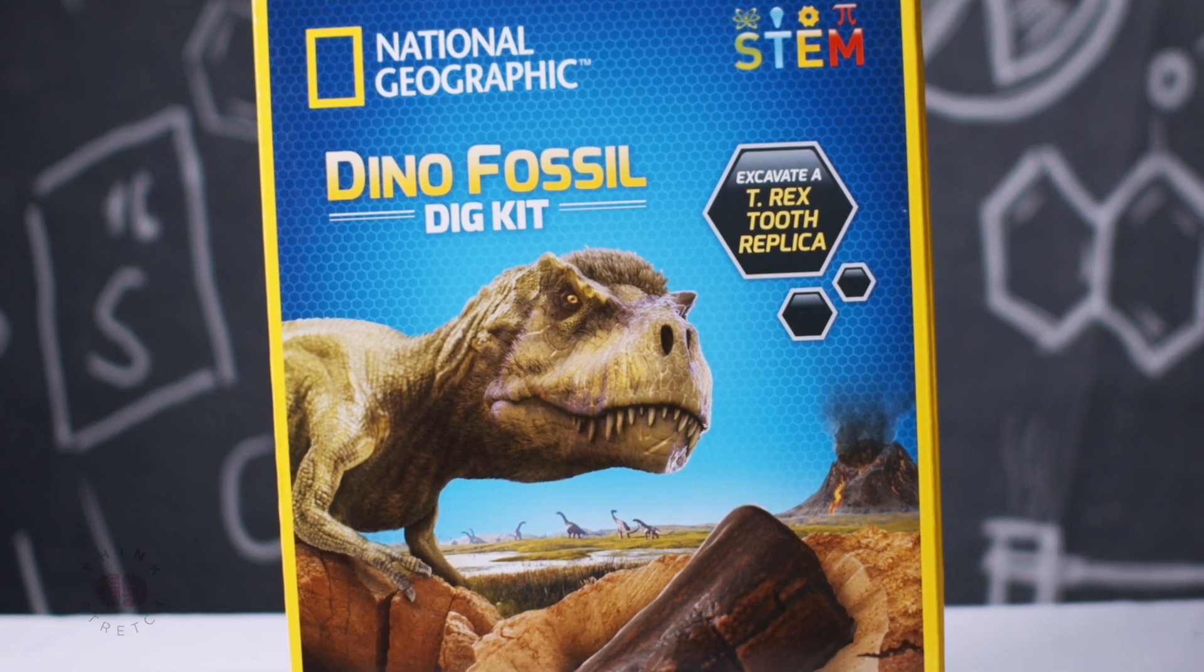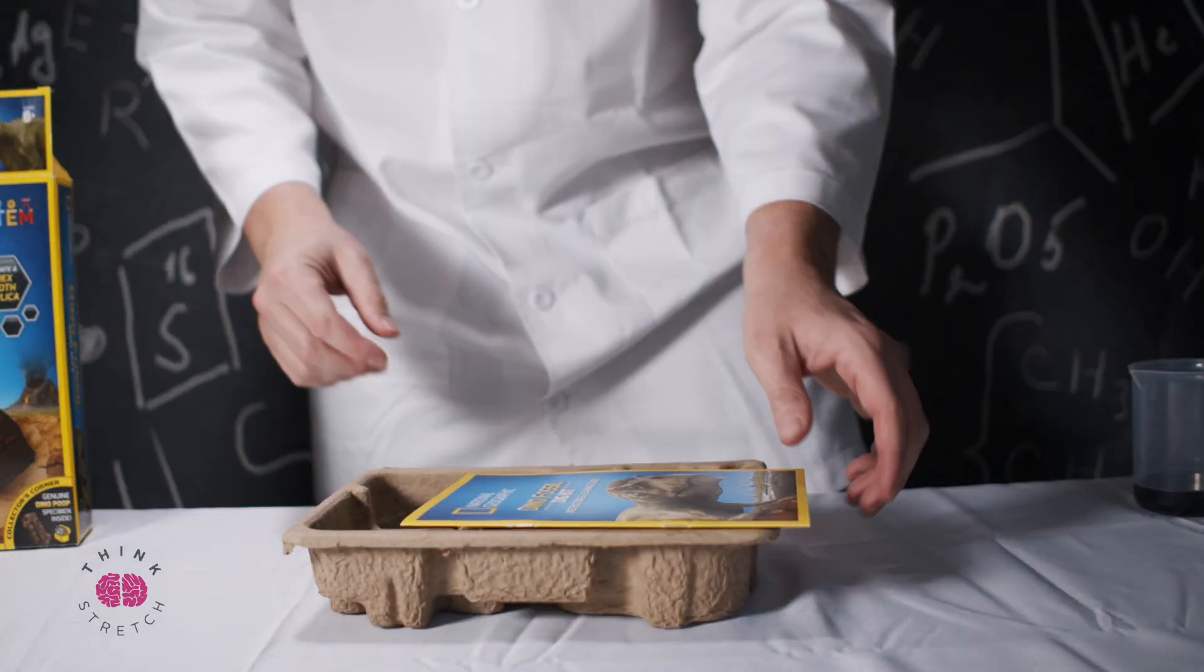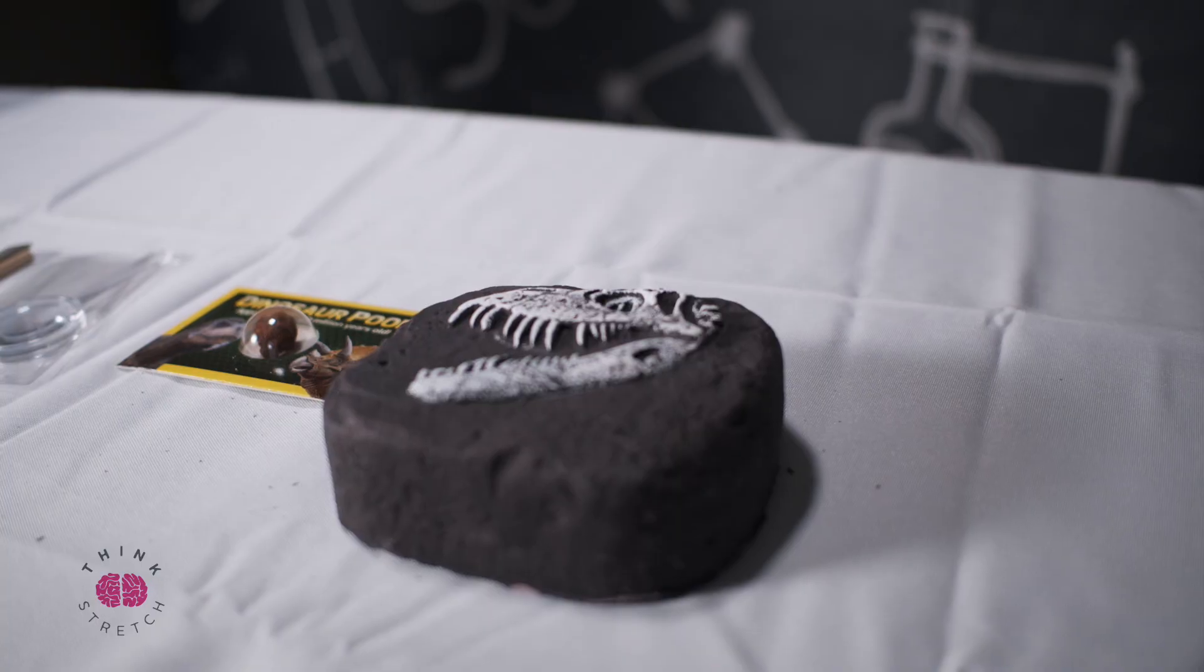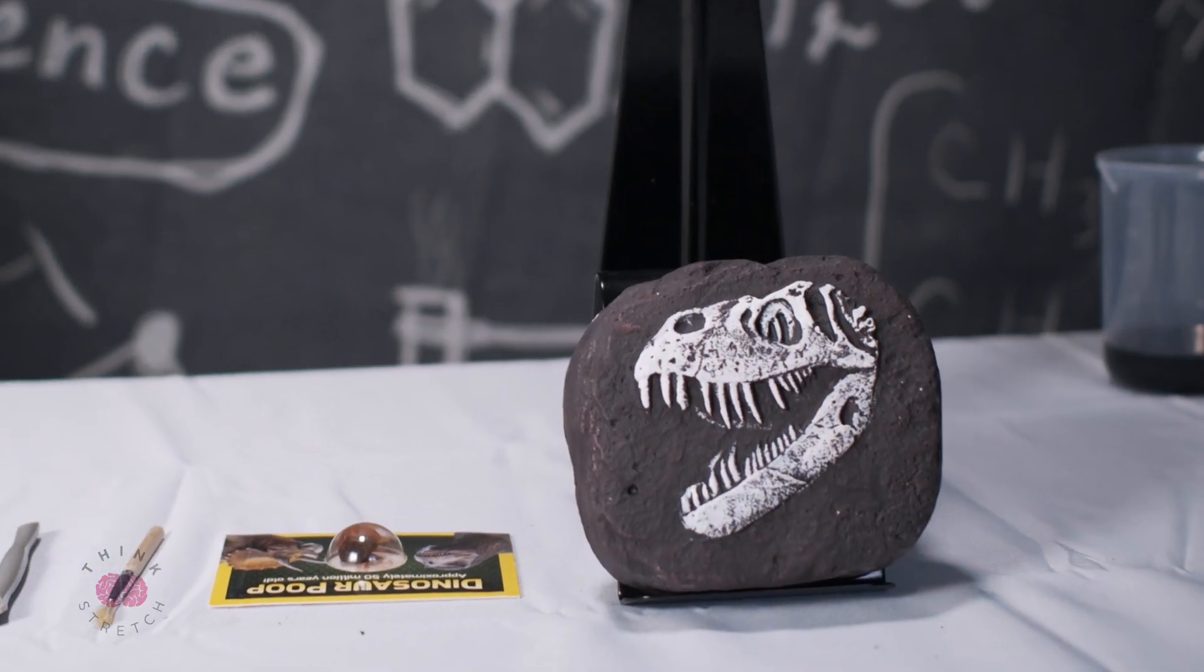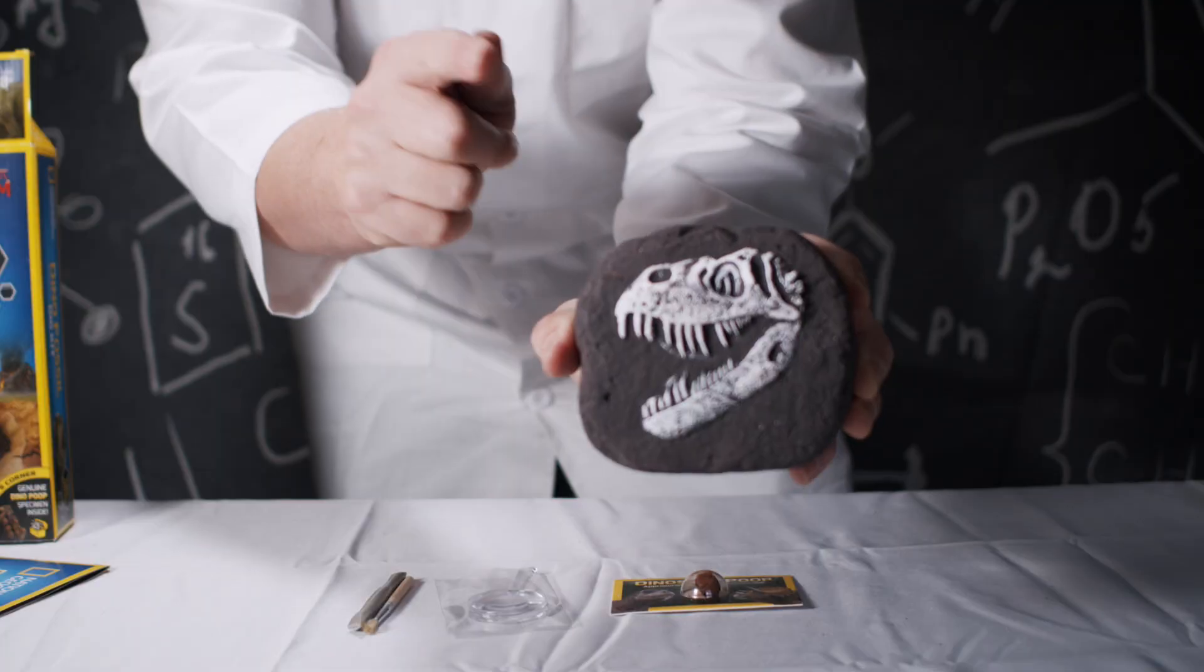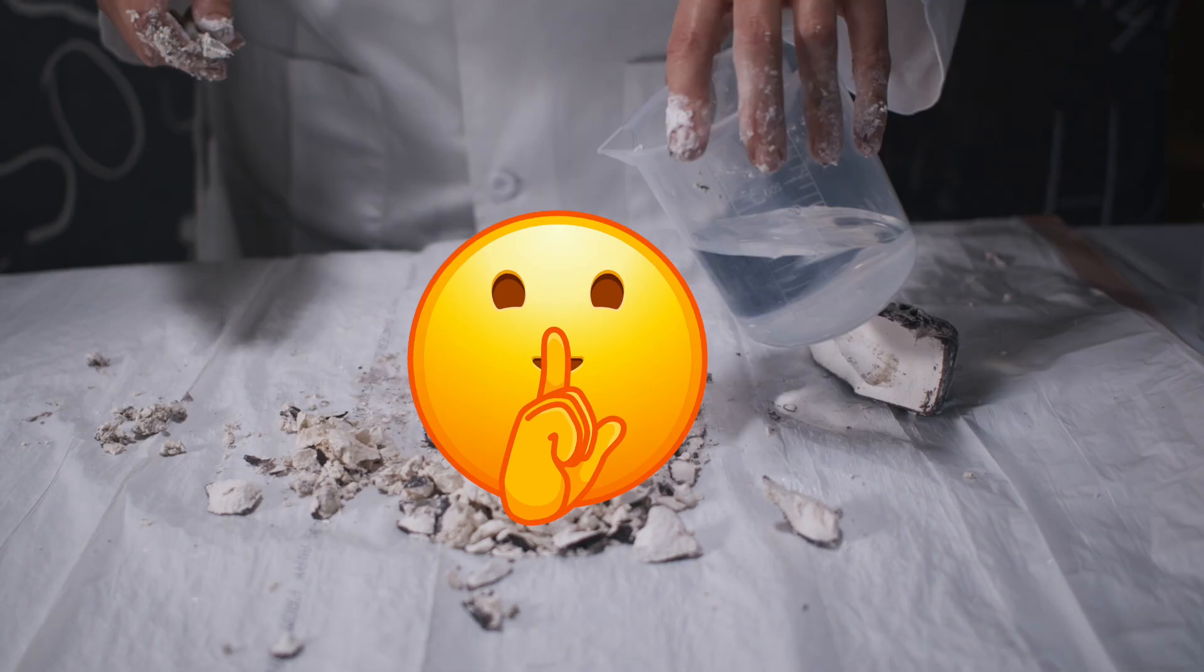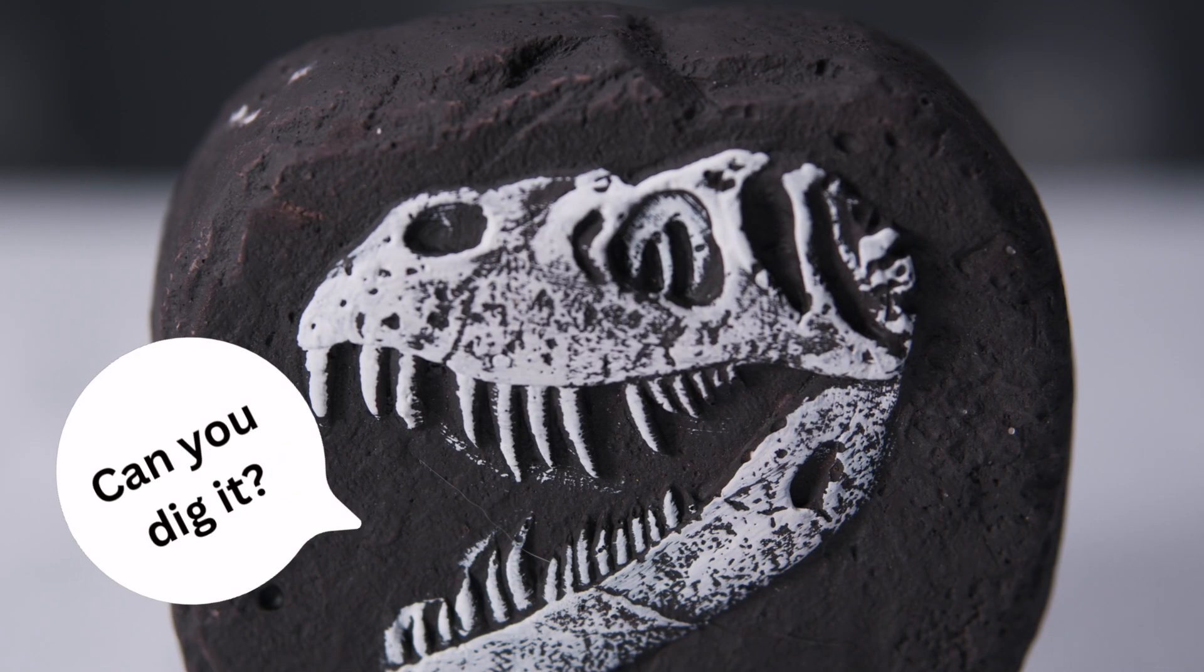Look at this. We've got the National Geographic Dino Fossil Dig Kit, the key to unlocking a treasure trove of dino-rific delights. Let's first take a look at the colossal dig brick. It's our Jurassic jigsaw puzzle, waiting for us to dive in and discover dino-mite surprises. What do you think we might find in there? Could there be bones? Rumor has it there could be something sharp and pointy buried inside. I can't wait to find out.